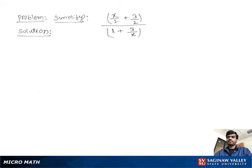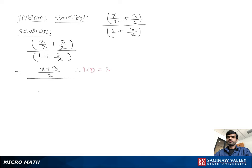Simplify x over 2 plus 3 over 2, over 1 plus 3 over x. For the numerator, we keep the fraction as it is by taking the LCD of 2, so we get x plus 3 over 2.